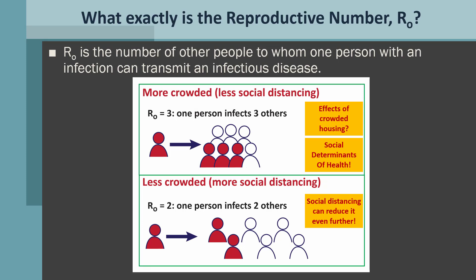The other point here is that social distancing reduces the R0 and, of course, it can reduce the R0 to lower than 2. These are just examples.